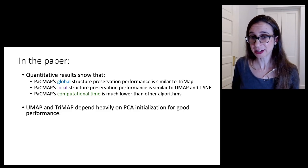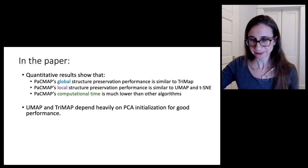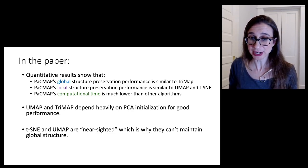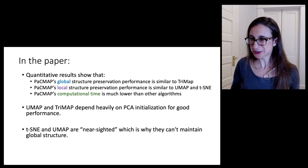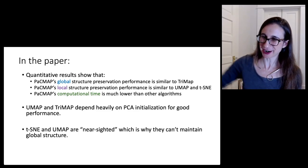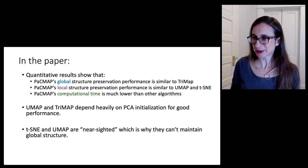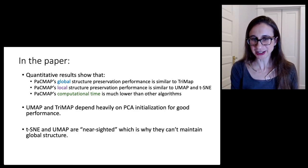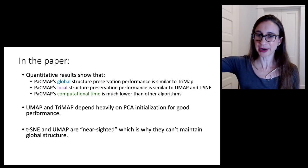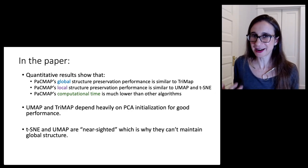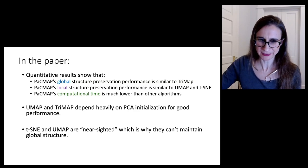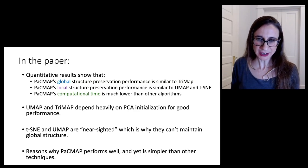We've also shown in the paper that UMAP and TriMap really depend heavily on their initialization for good performance. We don't think that a DR algorithm should really depend so heavily on its initialization for good performance. It should be able to even have random initialization and have good performance. And luckily, because of the way we designed it, PacMap is able to do that. We also showed that t-SNE and UMAP are nearsighted. Nearsighted means you can see near, but you can't see far. t-SNE and UMAP basically just pay attention to the neighbors in the high dimensional space and unfortunately lose track of what's a little further away, which is what we claim is the reason why those algorithms are really not good at maintaining global structure.